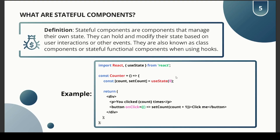The useState hook is used to define state inside a component. In the example, JSX is returned and a useState hook is defined inside the logic. There is a count value that can be altered by clicking a button using a setCount function that modifies the state. We'll go more in depth in a separate future video dedicated to the useState hook.